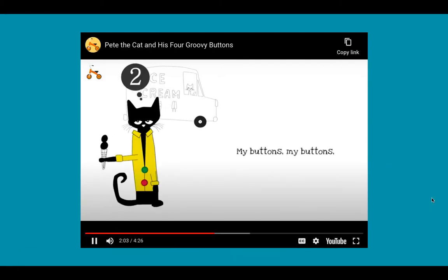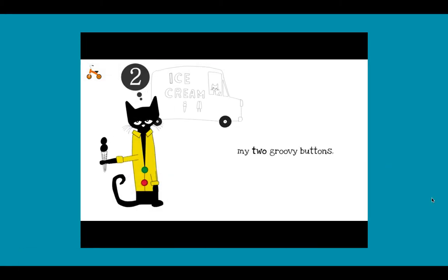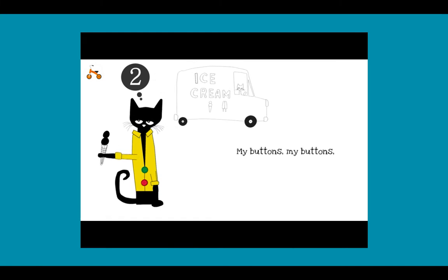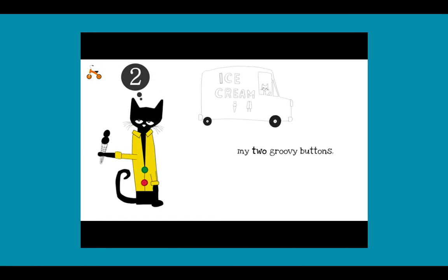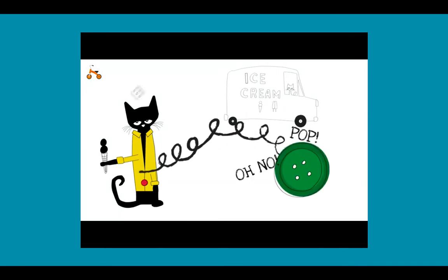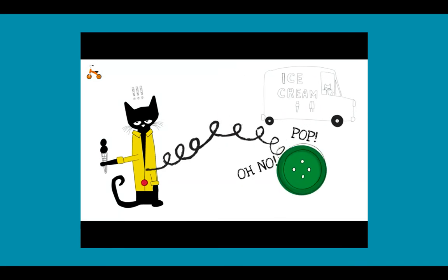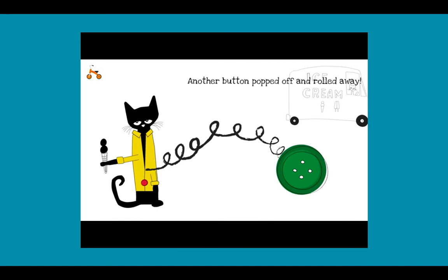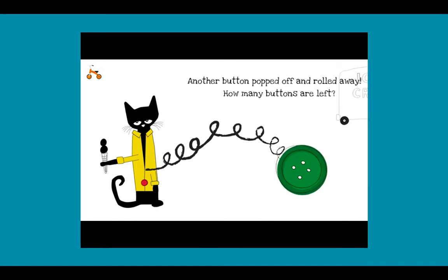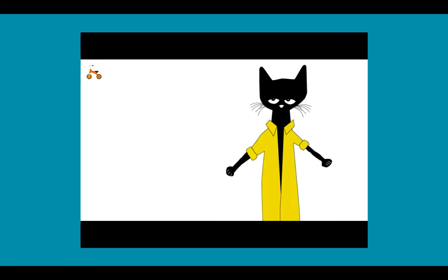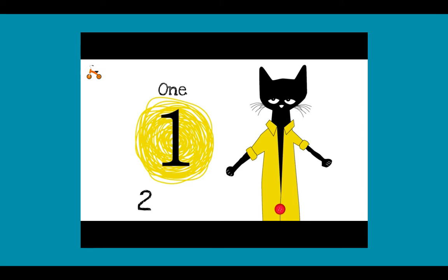My buttons, my buttons, my two groovy buttons. Oh no! Another button popped off and rolled away. How many buttons are left? One! Two minus one equals one.